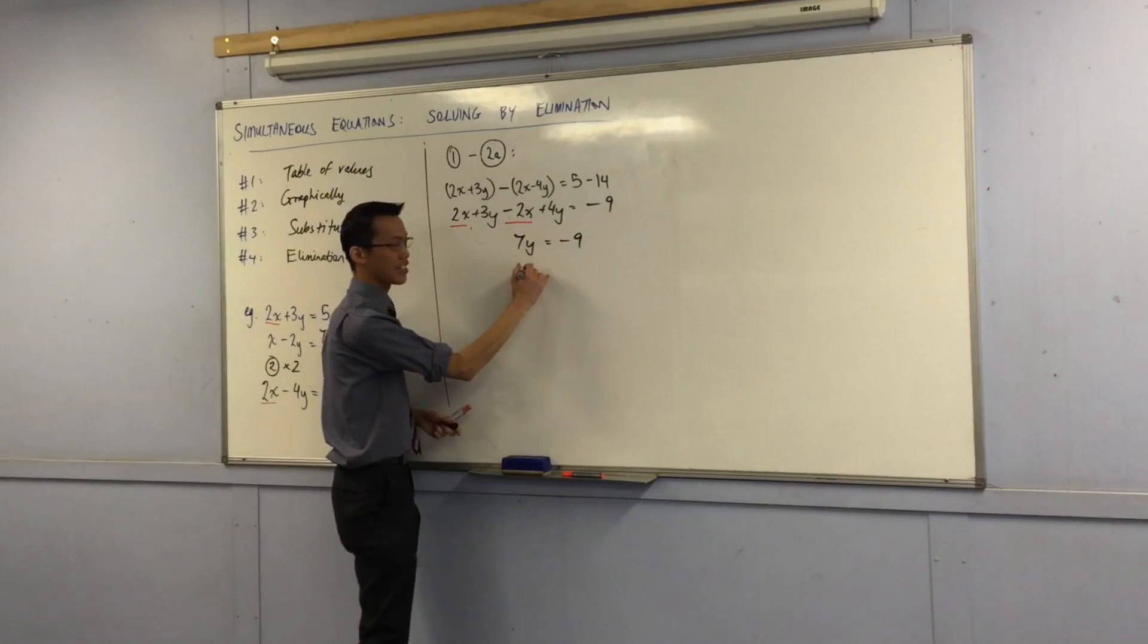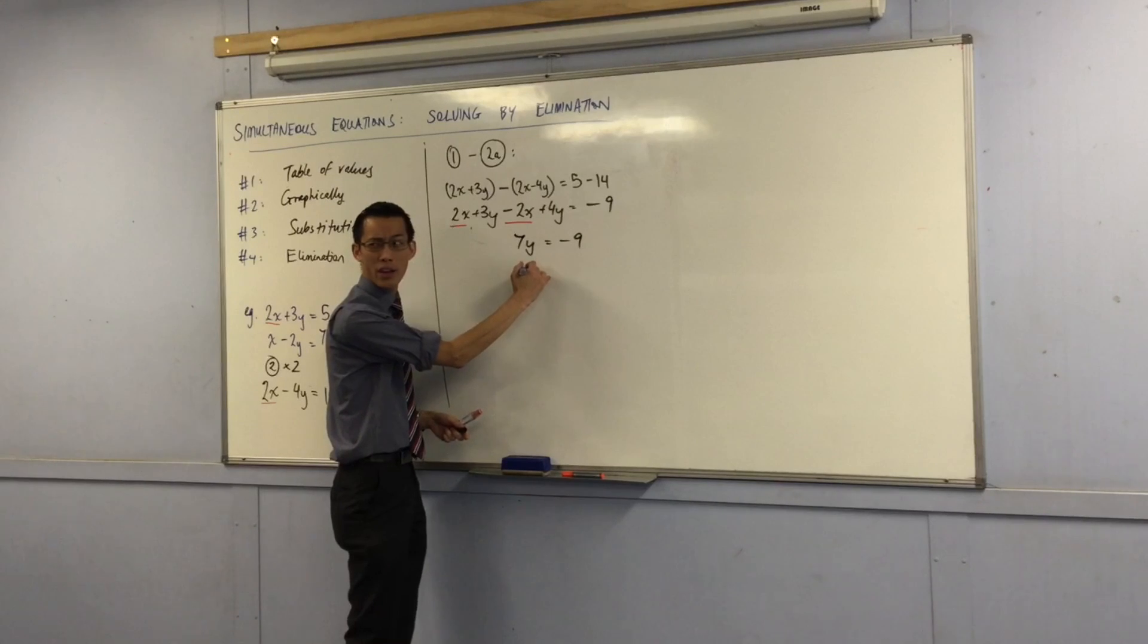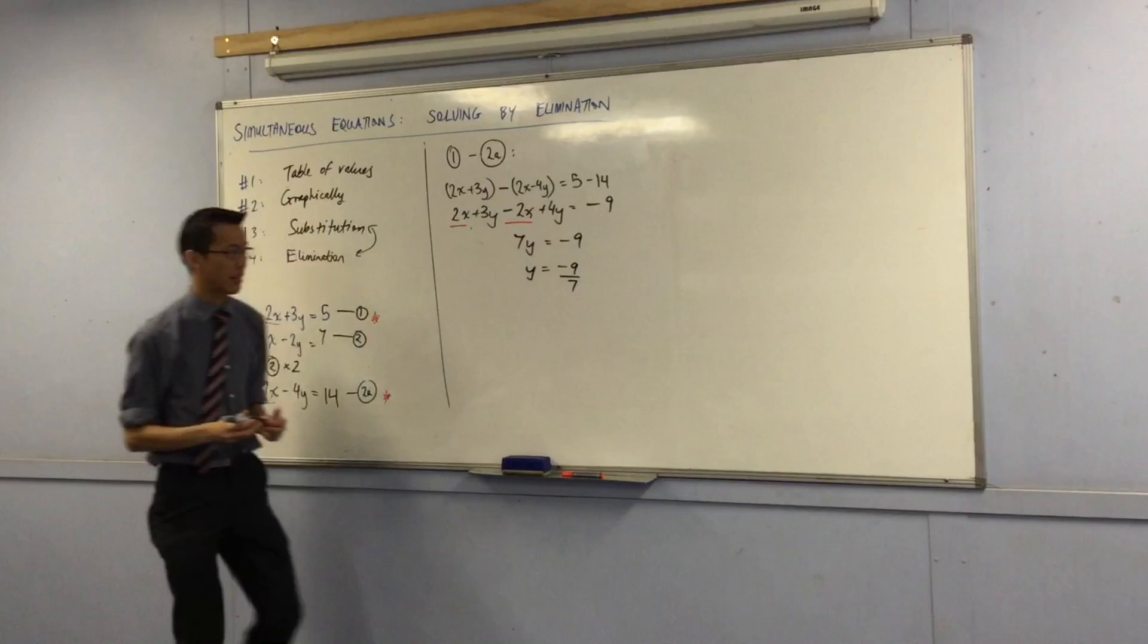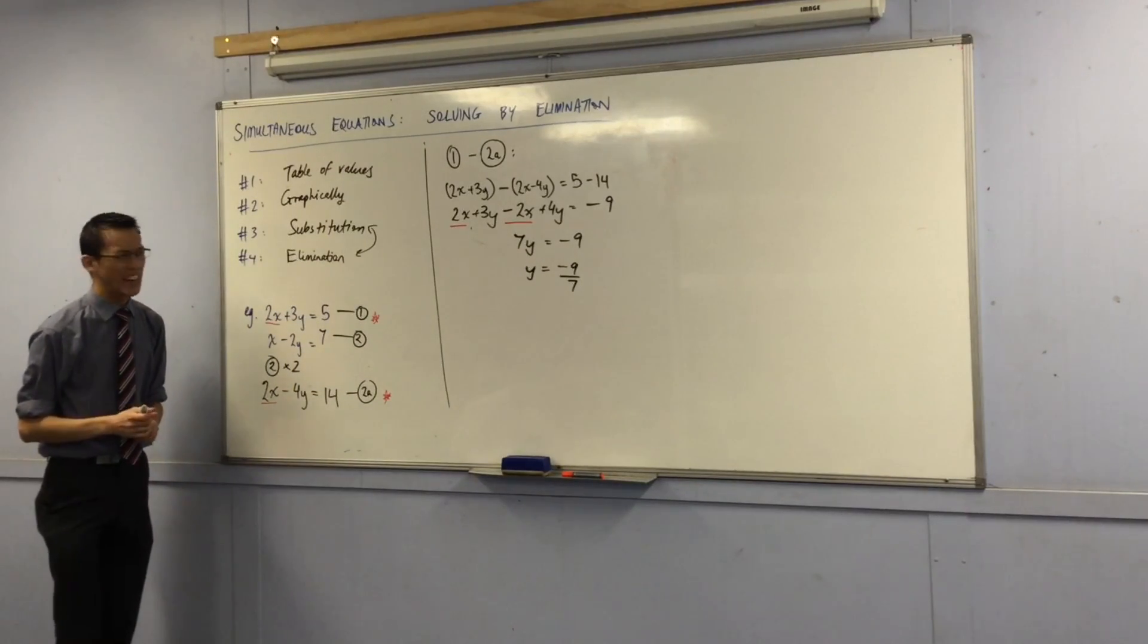Okay, so they're gone and all I'm left with is these 2 guys. When you collect like terms, there are 7 of them. Yeah? There's a negative 9 left over there. Last little piece. I guess I need to get the y by itself, so I will divide by 7, which leaves you with that.